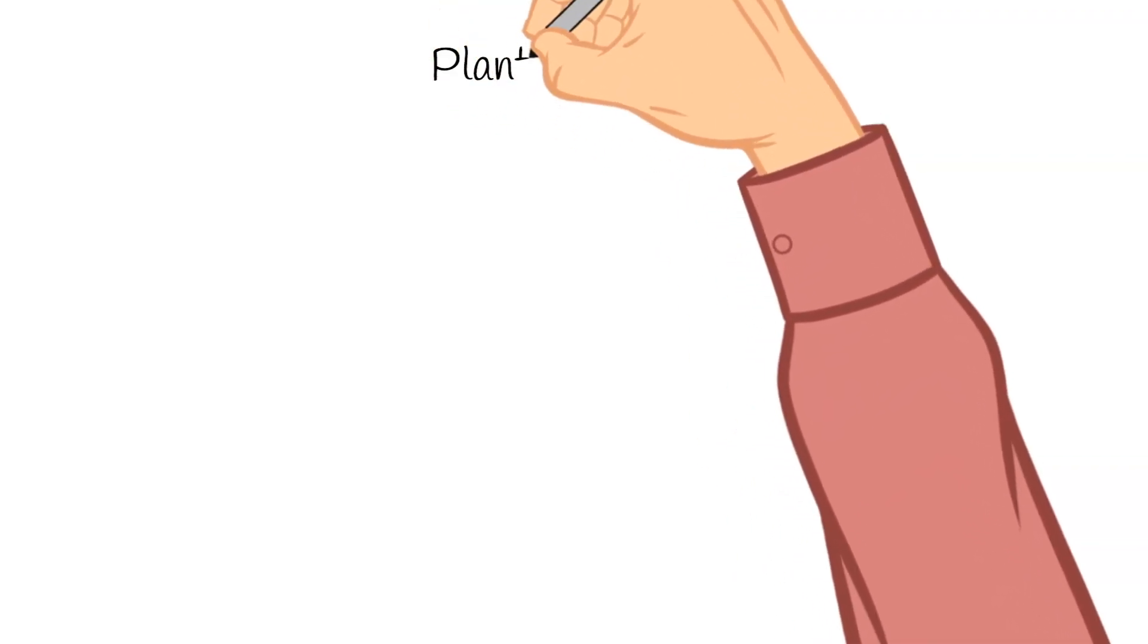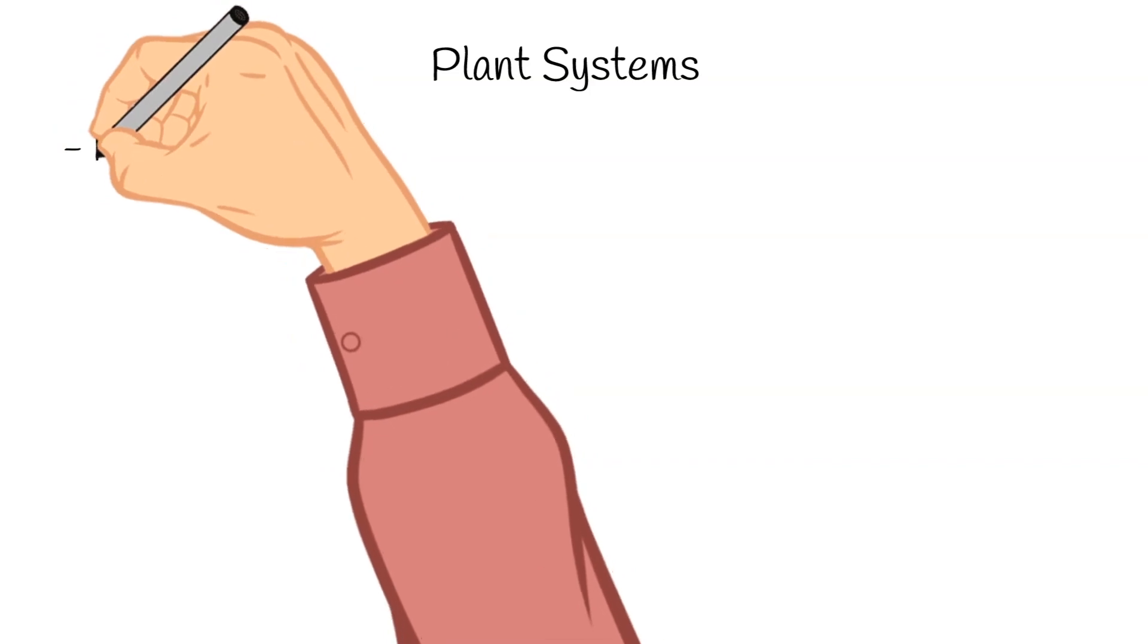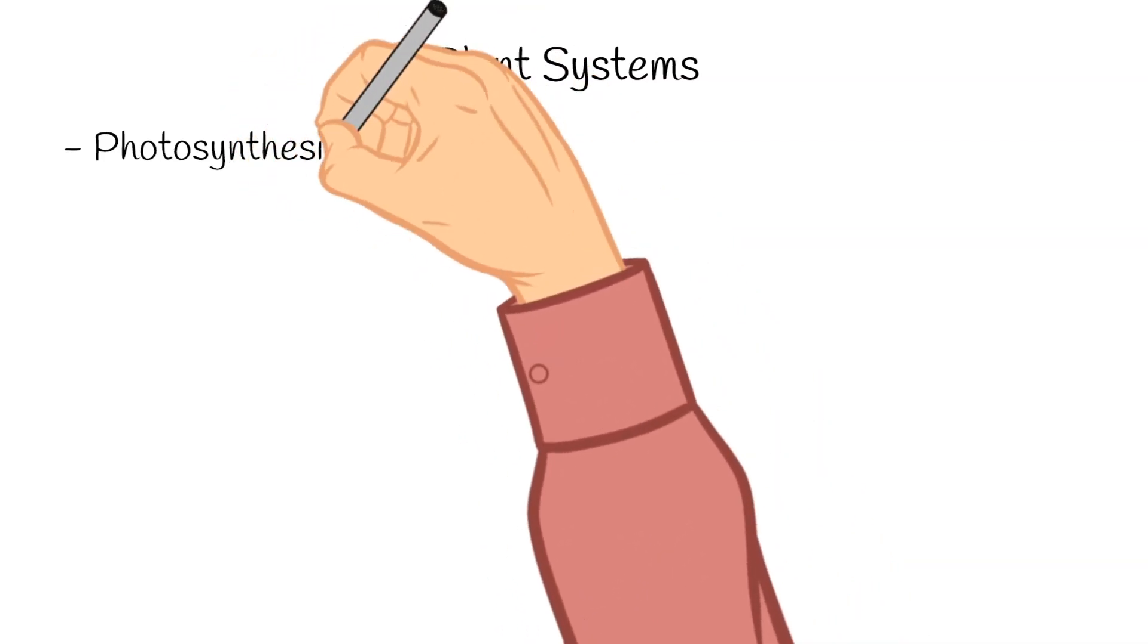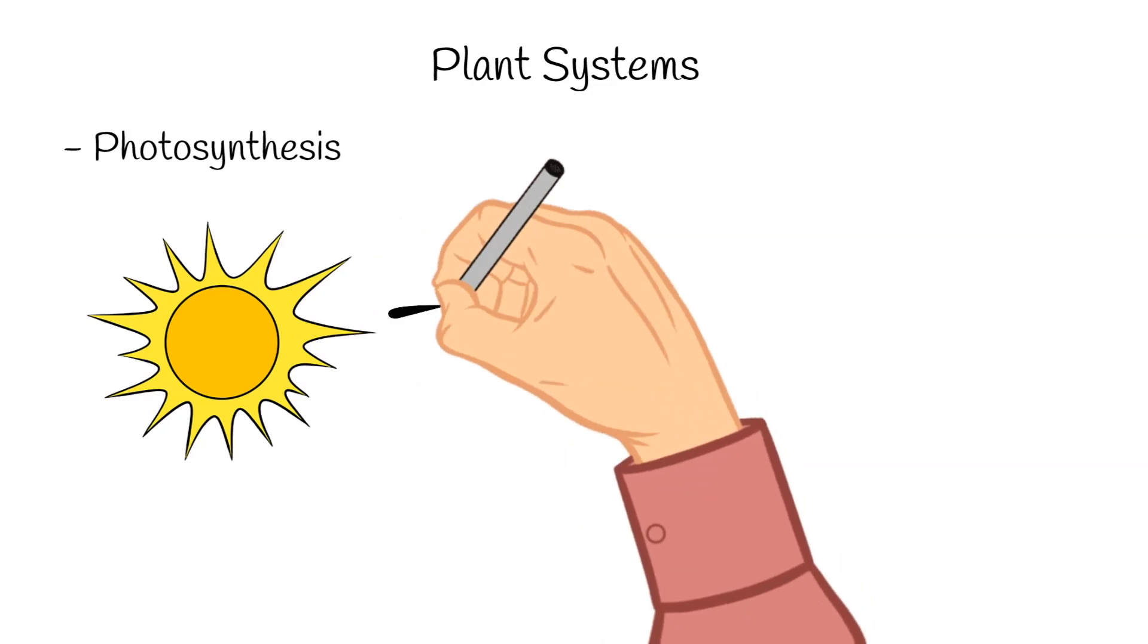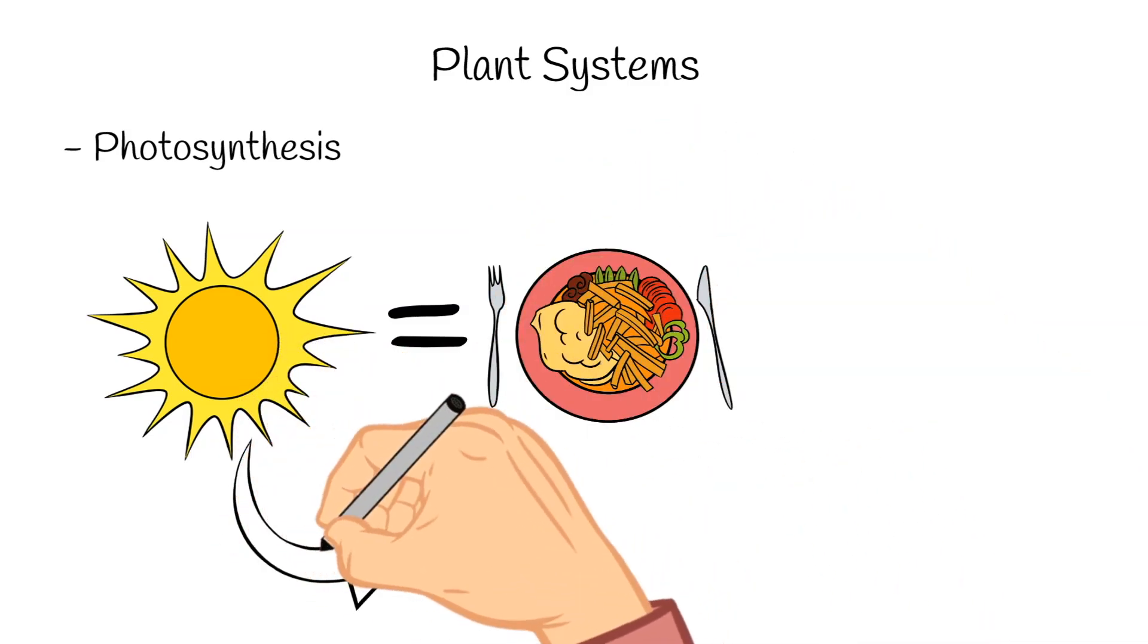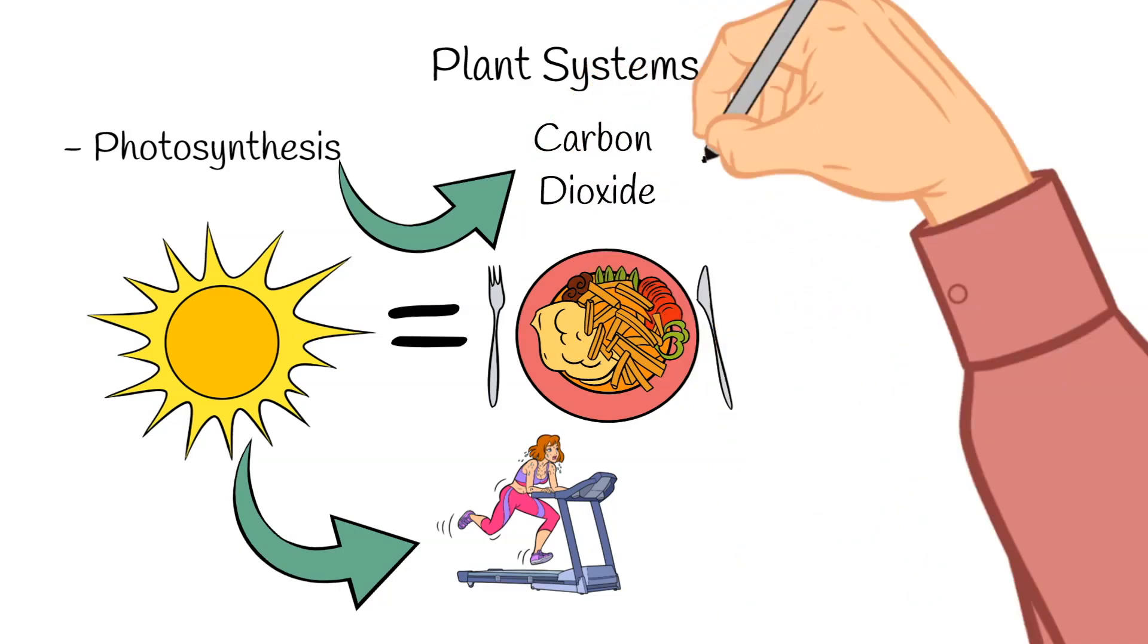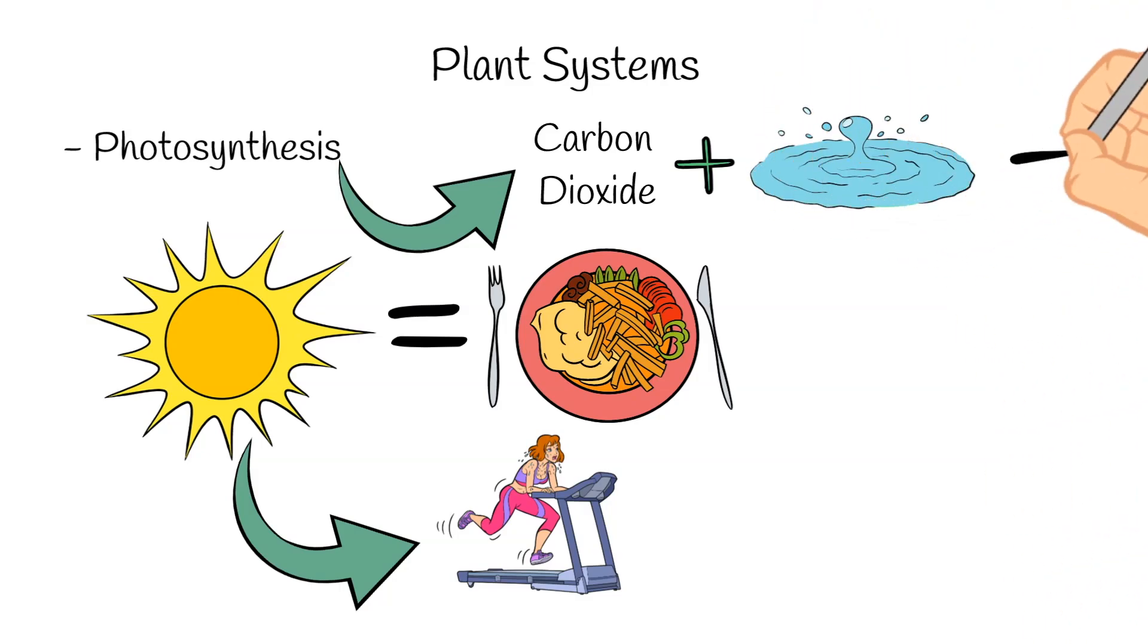First up on the plant systems that we are going to talk about today is photosynthesis. For the last several videos, I have mentioned photosynthesis and generally how it works before, but now I would like to dive a little bit further into photosynthesis. So plants need sunlight to live, but it seems sort of strange that sunlight can actually be a type of food. Well, sunlight is energy, and photosynthesis is the process that the plants use to take this energy from this sunlight and use it to convert carbon dioxide and water into food.